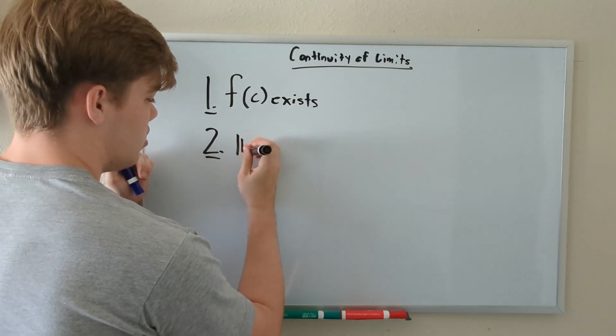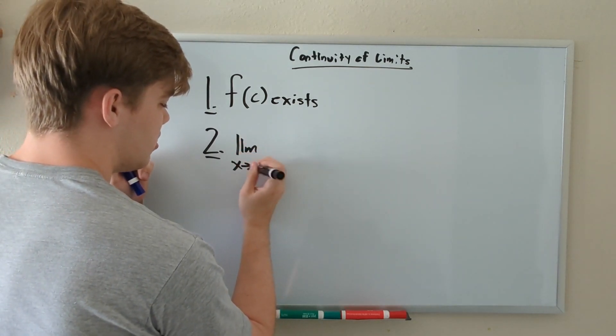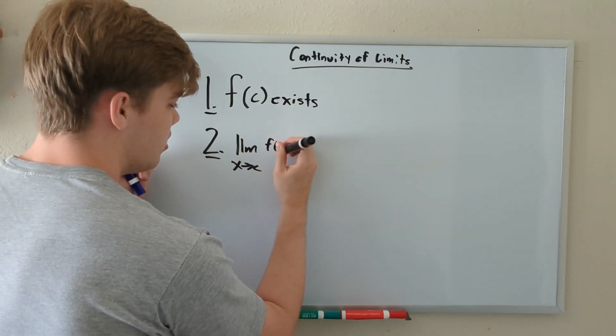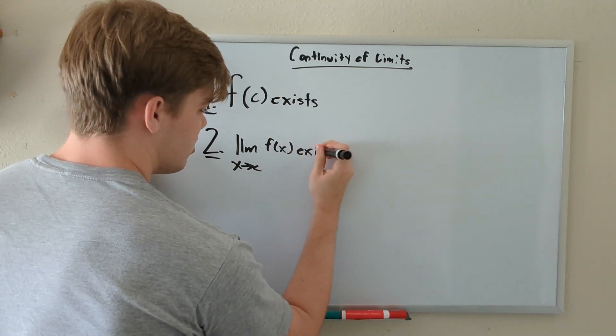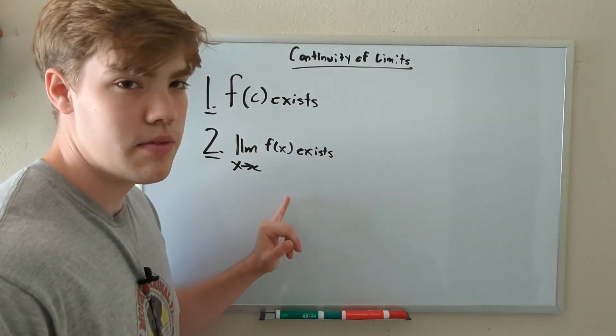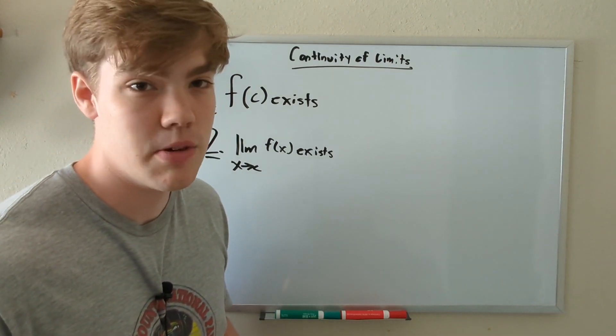Rule number two: the limit as X approaches C of F of X, our function, also has to exist. Essentially, if we don't have a defined limit at that point, this function can't be continuous.